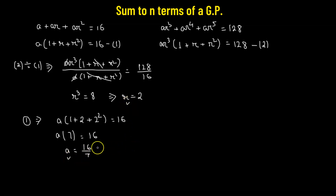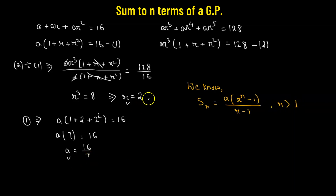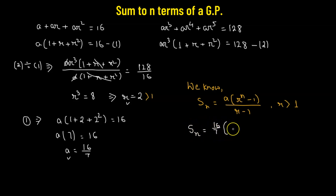Now that we have the common ratio and the first term, we use the sum formula. The sum of n terms is Sₙ = A × (Rⁿ − 1) / (R − 1), which applies when R > 1. Since R = 2, which is greater than 1, we use this formula. Substituting: Sₙ = (16/7) × (2ⁿ − 1) / (2 − 1) = (16/7)(2ⁿ − 1), since 2 − 1 = 1.